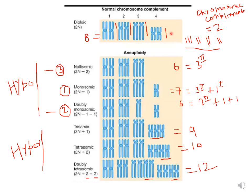When you compare with diploid counterparts, in hypoploidy the chromosome numbers are less — 6, 7, and 6 — while in hyperploidy they are more — 9, 10, and 12. I hope the topic of aneuploidy is clear. You can refer to Pearce, Lewin, Klug and Cummings, Griffiths, as well as P.K. Gupta for this topic. Thank you students, we will meet in the next lecture.